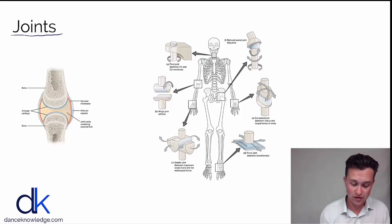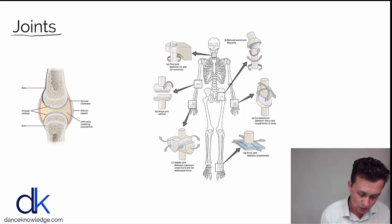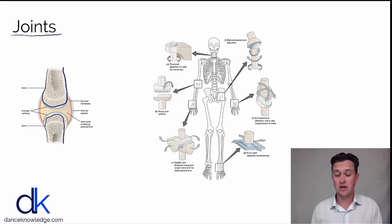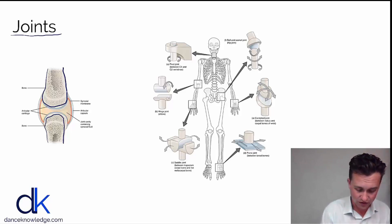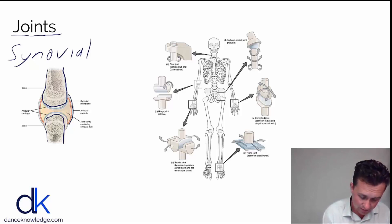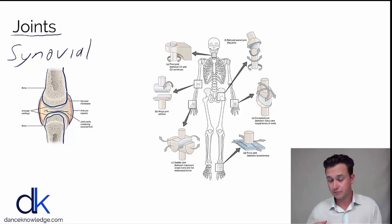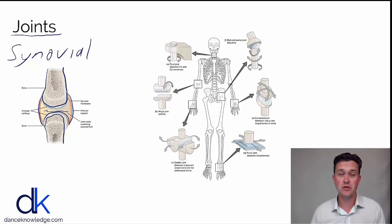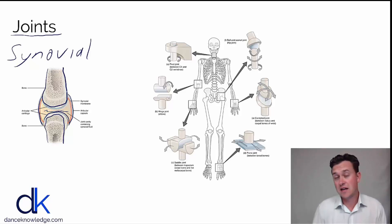A joint within the body in its simplest form is two bones that are connected together. The joints we're really interested in from a human movement perspective are what we refer to as synovial joints. Synovial joints are unique because they're capable of producing a lot of movement. They have a synovial capsule surrounding them that is full of synovial fluid, and the bones also have a cartilage barrier which aids smooth movement between the two bones. In its simplest form, a skeletal joint is just two bones connected together, and they're connected by ligaments.